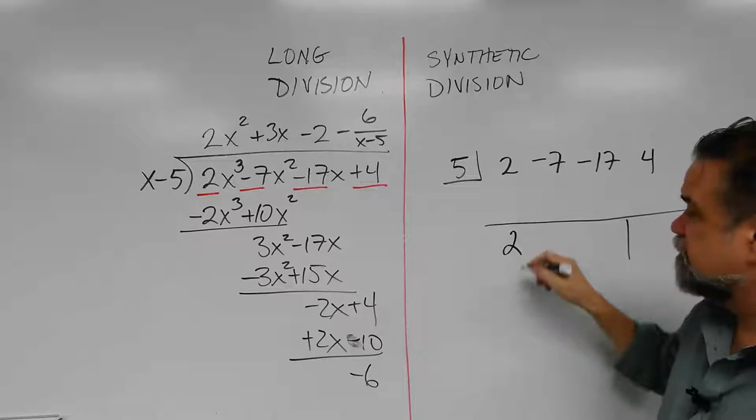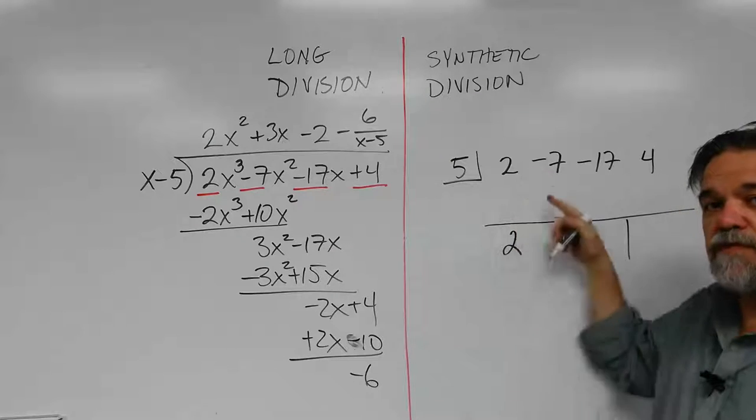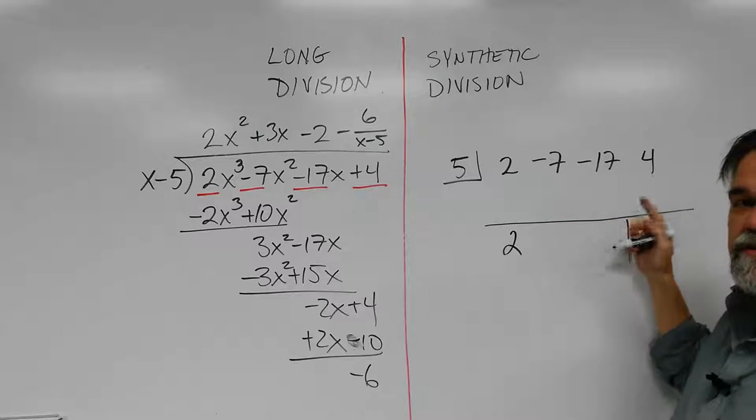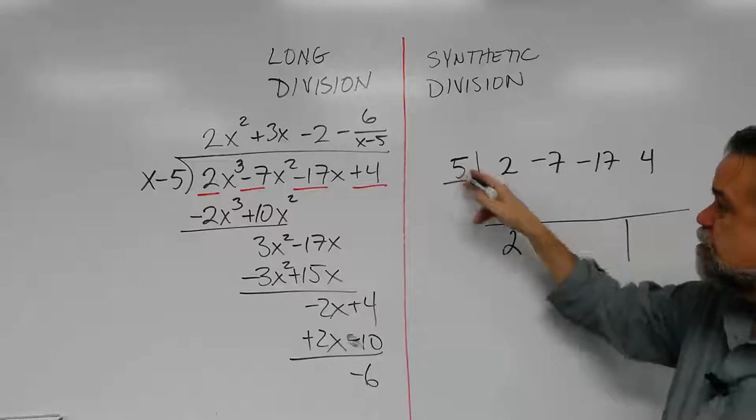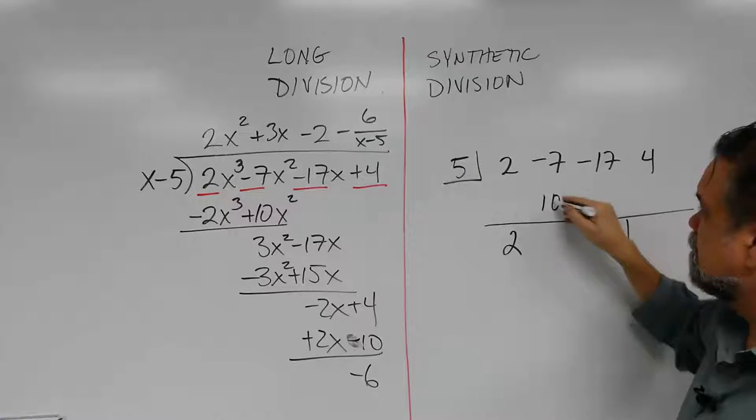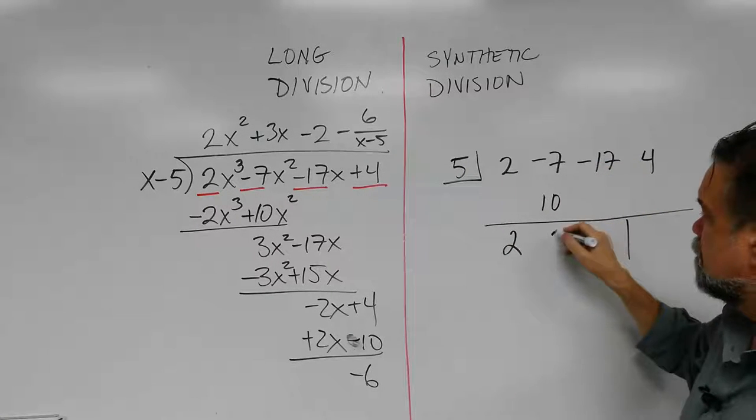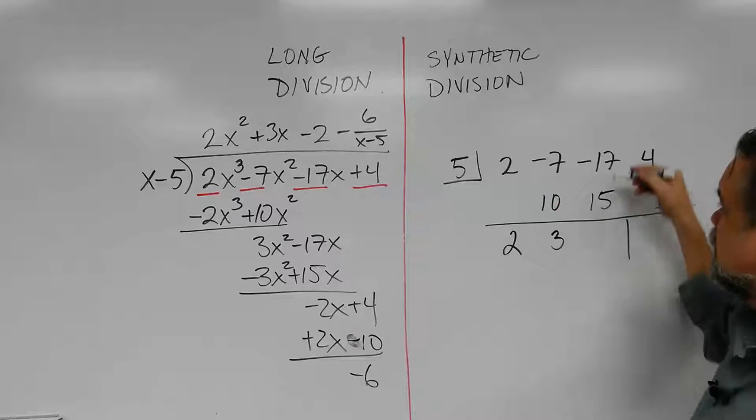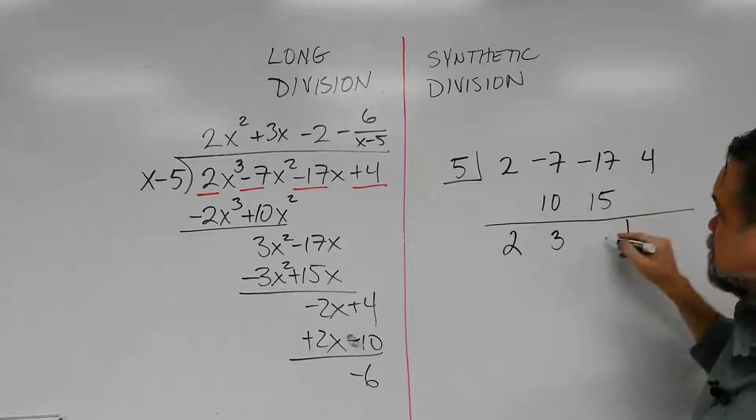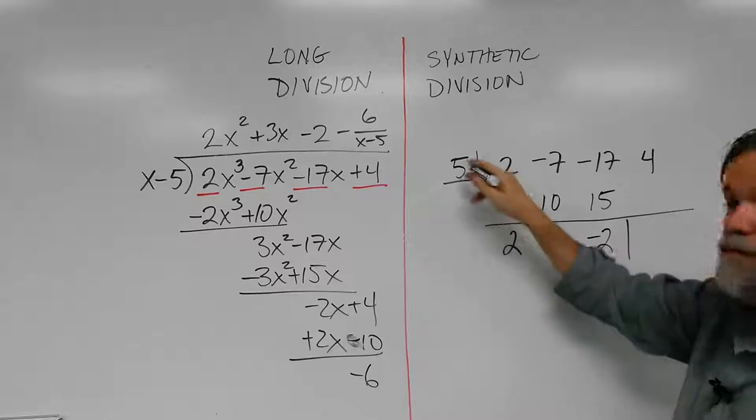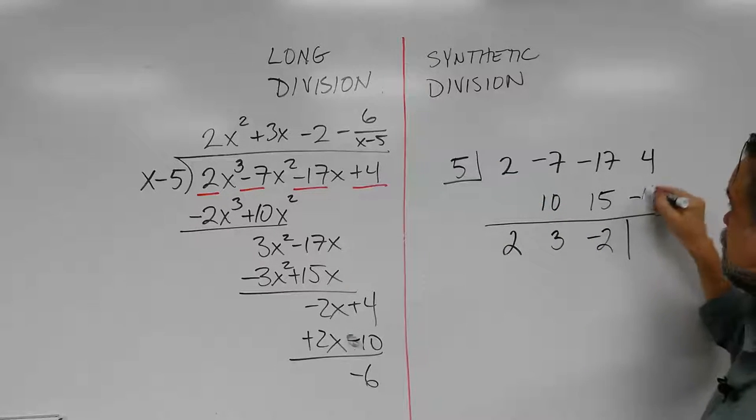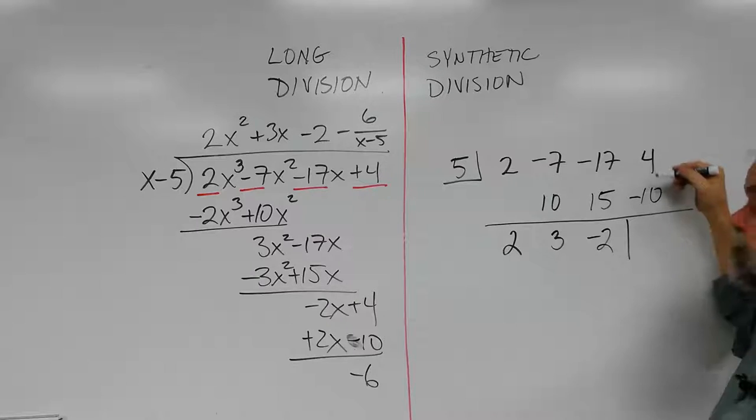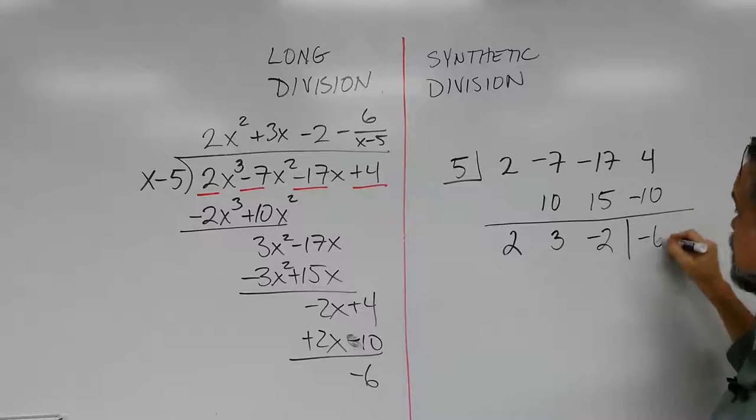This is how fast it goes. Drop down the 2. After this, it's just multiply, add, multiply, add, multiply, add, and you're done. 5 times 2, 10. Add, negative 7 plus 10, 3. Multiply, 5 times 3, 15. Add, negative 17 plus 15, negative 2. Multiply, 5 times negative 2, negative 10. Add, 4 plus negative 10, and you get negative 6.